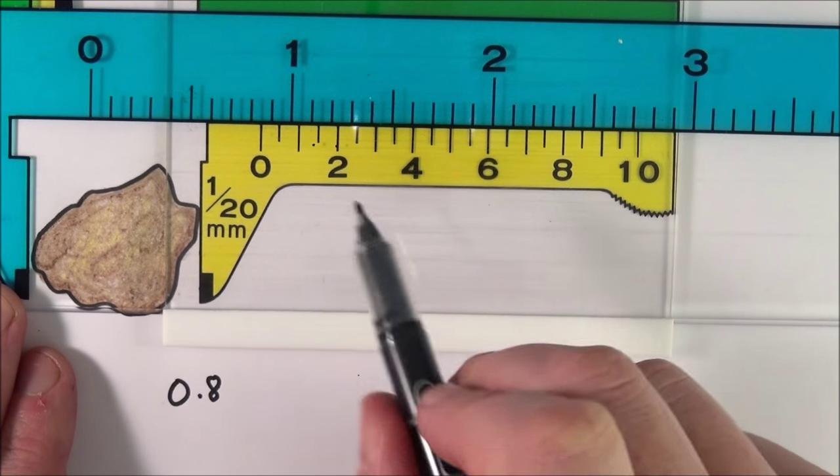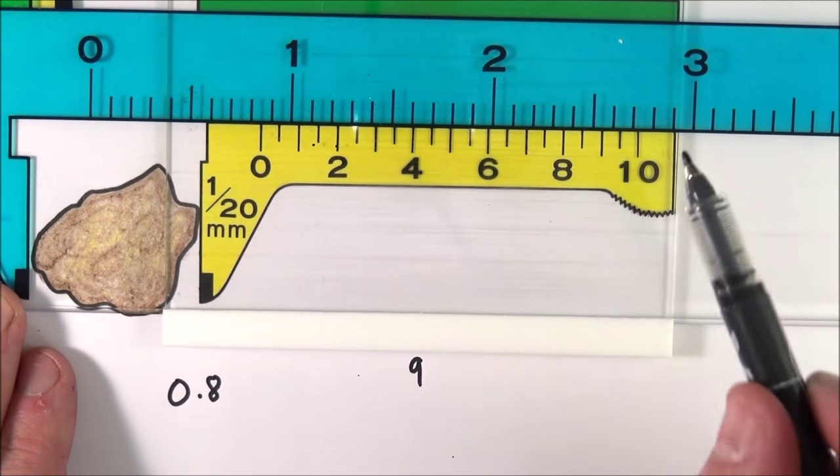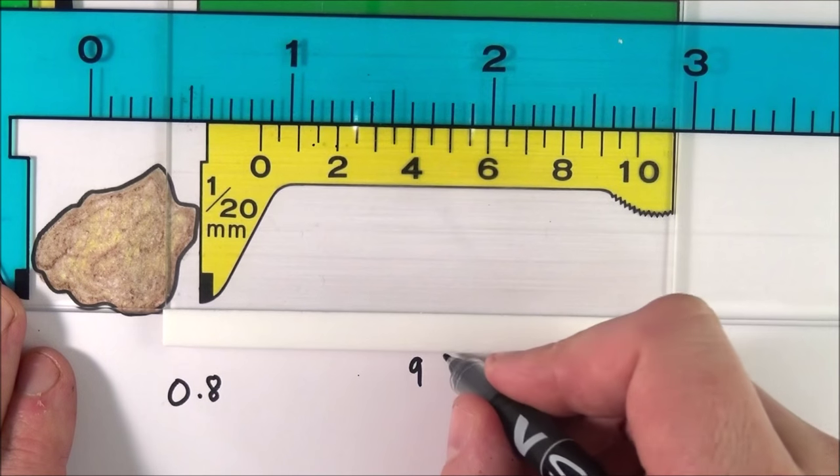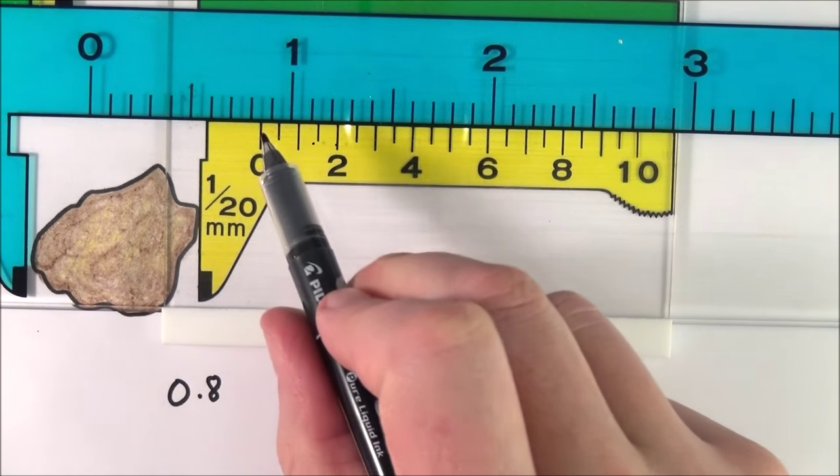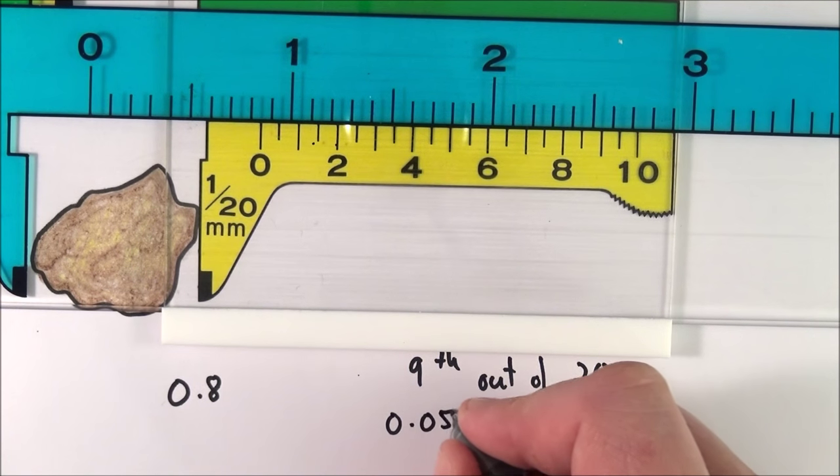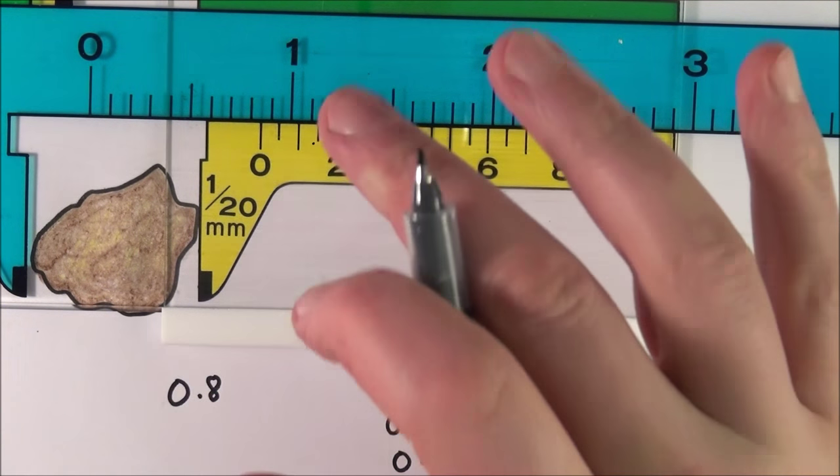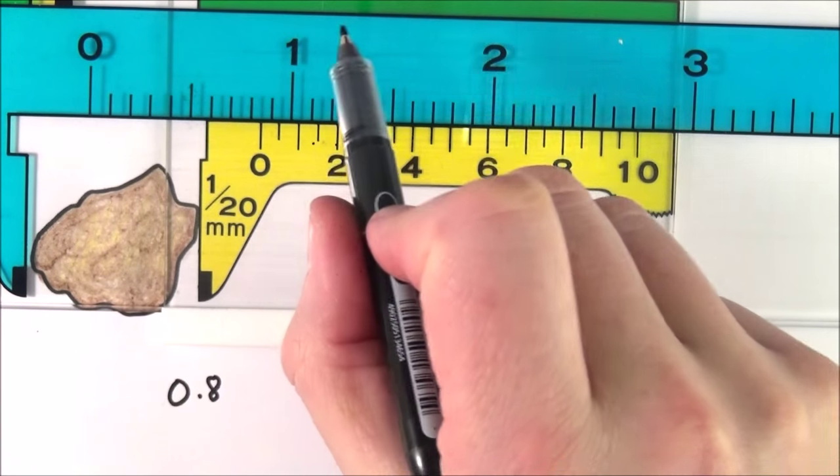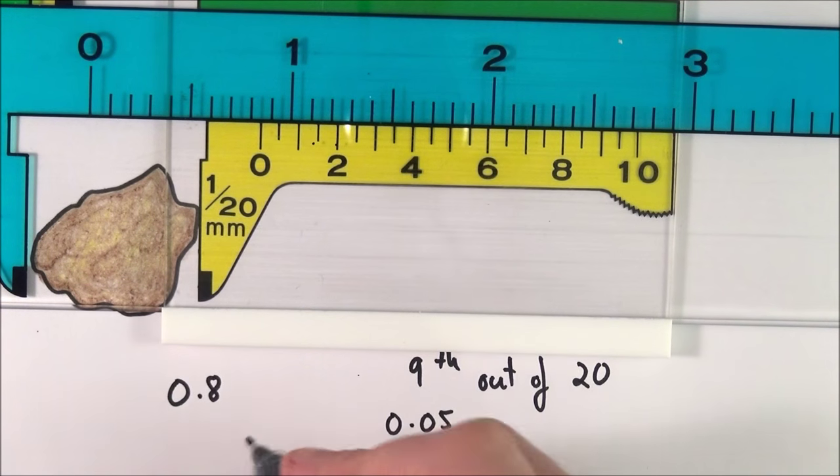This whole thing from 0 to 10 is a millimeter and it's split up into 20 smaller divisions. It's basically the ninth out of 20. If each division here is a 20th of a millimeter, that means each represents 0.05 of a millimeter. If it's the ninth one, that's nine times 0.05, which equals 0.45 of a millimeter. The final reading is a distance of about 8.45 millimeters.